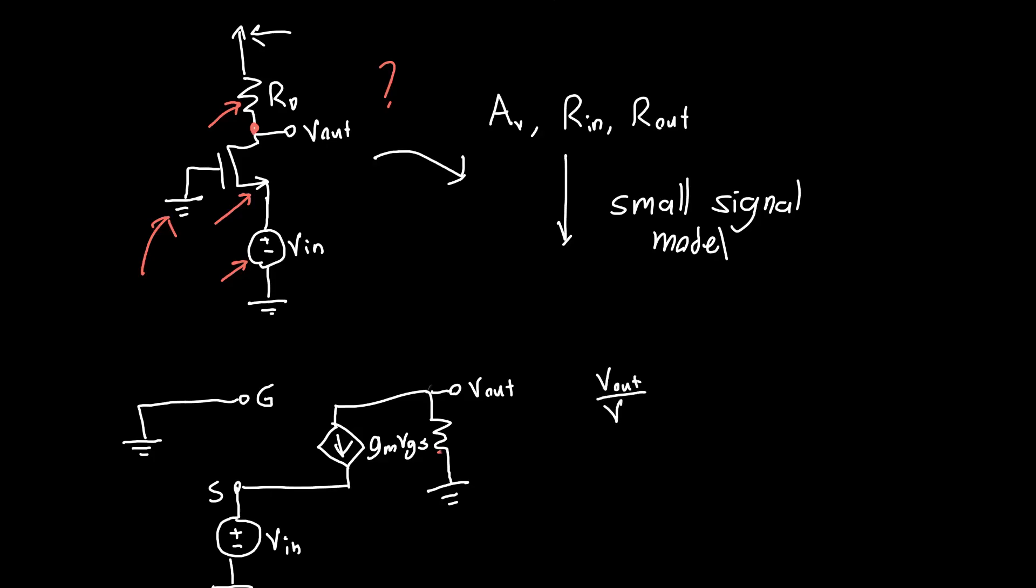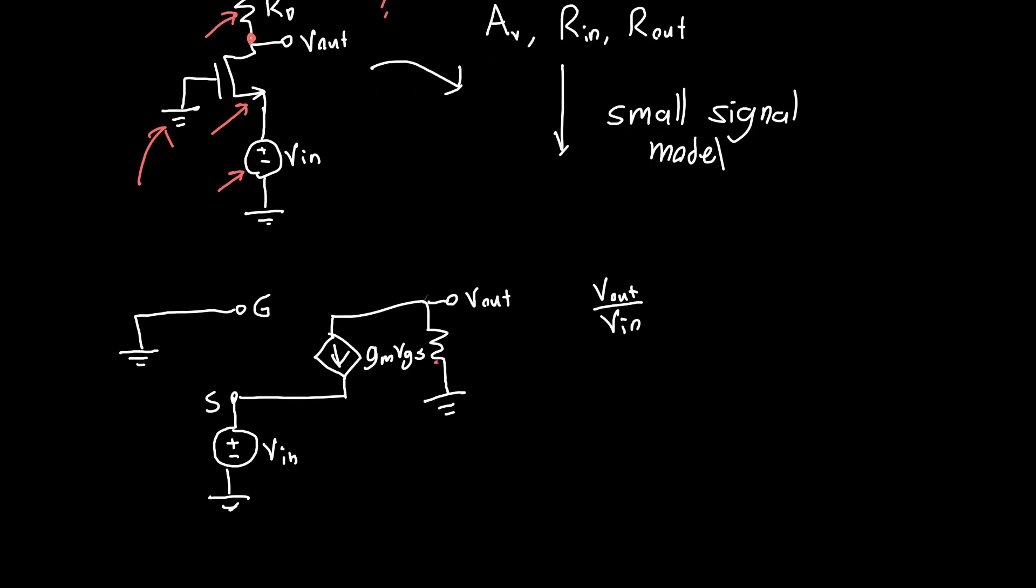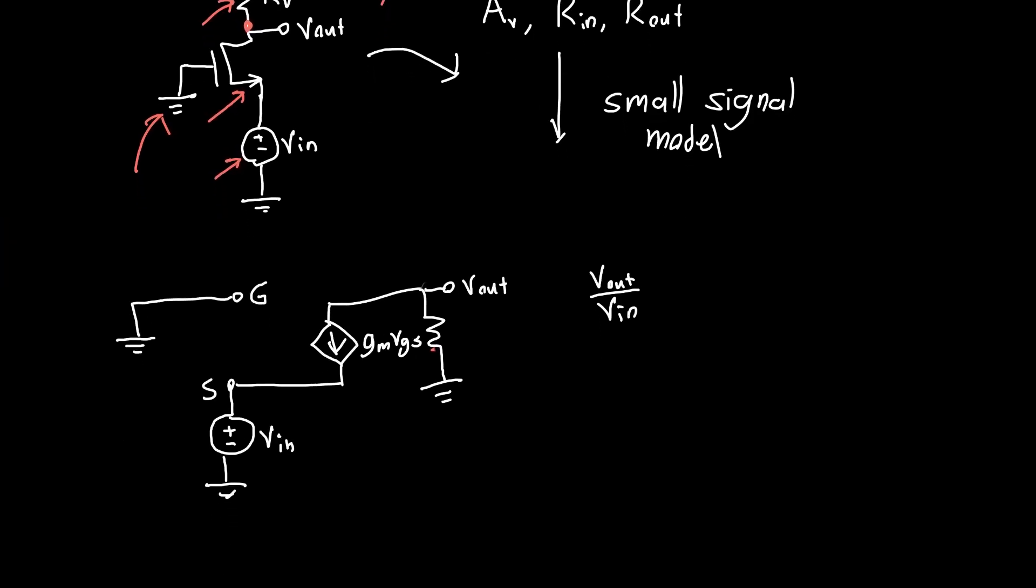What is Vout over VIN? You might say we've got a voltage source in series with a current source. What is going on? Has the universe gone crazy? No, the universe hasn't gone crazy. This circuit will actually turn out to be analyzable. Also this is VGS.